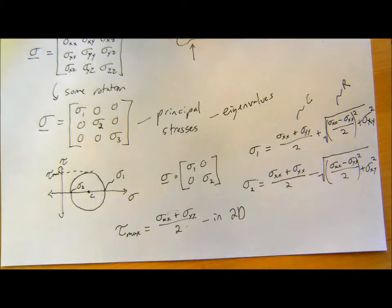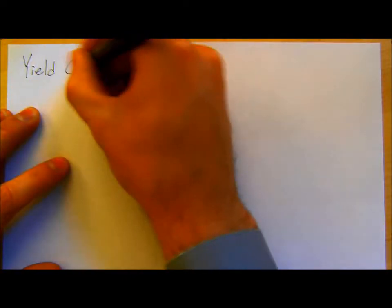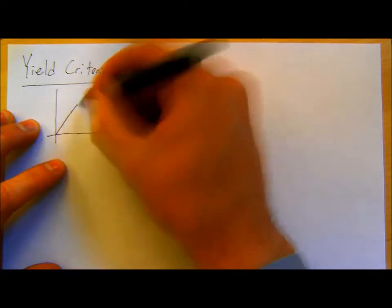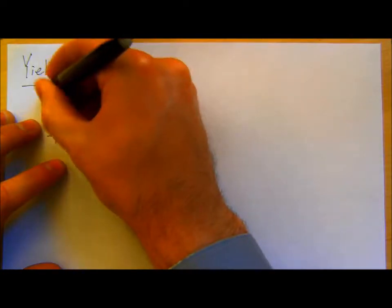When we start looking at failure for these things, what I want to know is a yield criterion. Here, in a stress-strain curve — uniaxial — this is some stress and some strain. What I'm really interested in finding is that yield point.